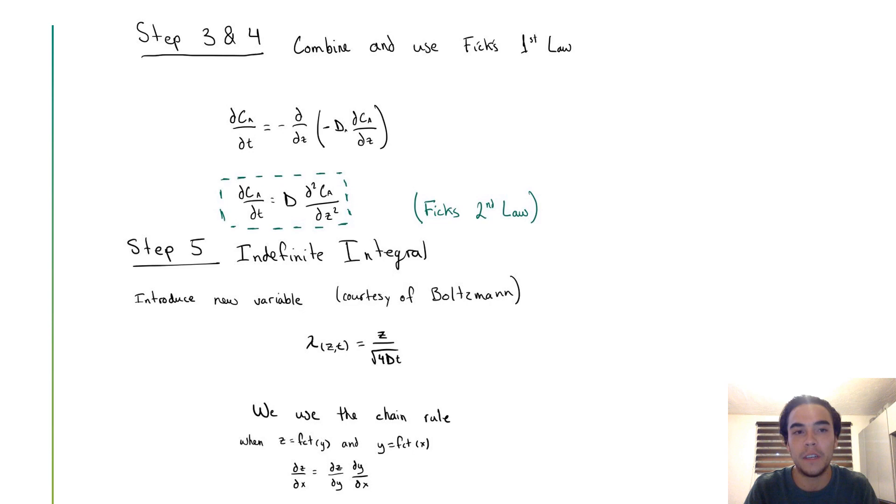Step 5 is the indefinite integral. We introduce a new variable here, courtesy of Boltzmann. He establishes that lambda equals z over square root of 4Dt.